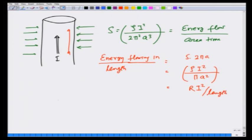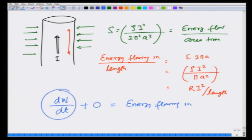Going back to the energy balance equation, dW/dt — since the current is steady there is no change in the electromagnetic energy, so that second term is 0 — equals the energy flowing in. From Joule heating I know this term is nothing but RI², and the right-hand side also comes out to be RI². So we have shown that the heat produced in the wire is actually brought in through the electromagnetic fields.